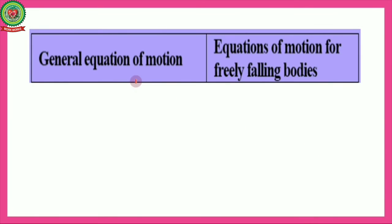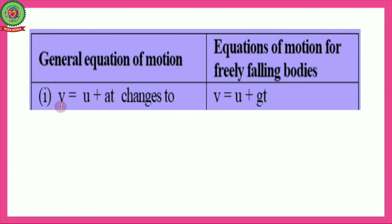Now let's look at the equations of motion for a freely falling body. The first equation of motion is v = u + at. When a body falls freely under gravity, 'a' changes to 'g' (acceleration due to gravity), so it becomes: v = u + gt, where v is final velocity, u is initial velocity, and t is time.